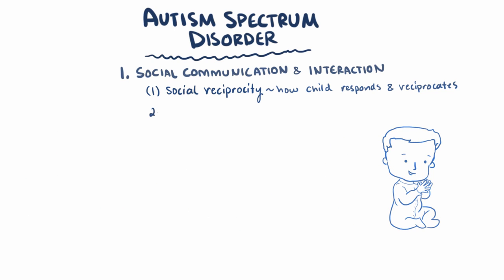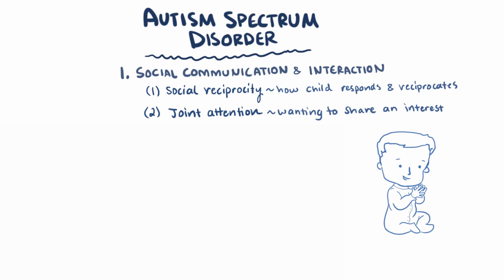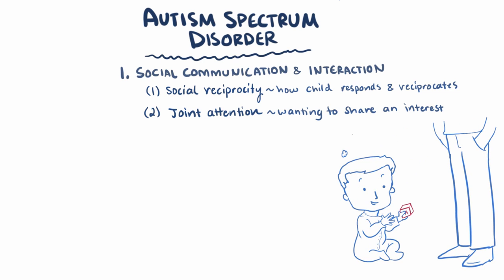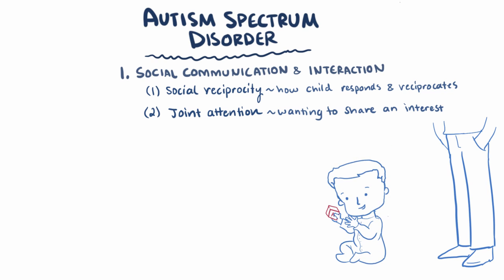A second area of potential deficit is joint attention, which is the state of wanting to share an interest with someone else — essentially saying "check out this awesome thing I found." An example impairment in this area might be a child not sharing their interests or amusement in an object with their parent.